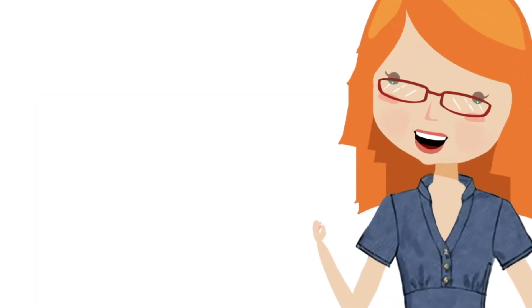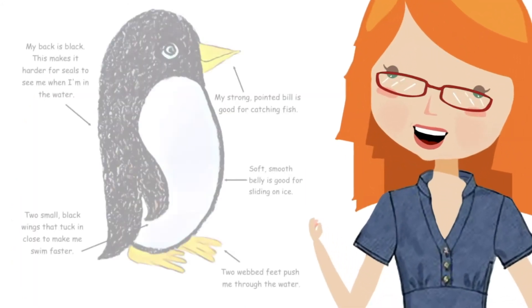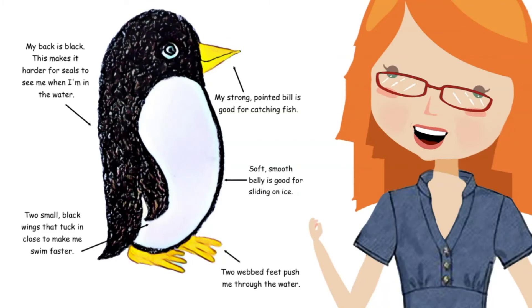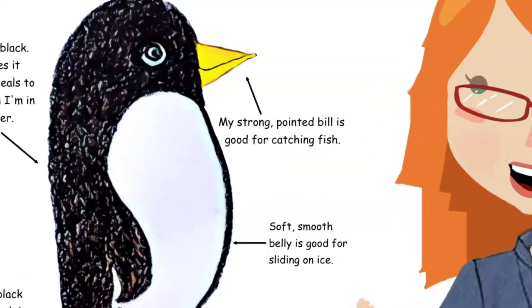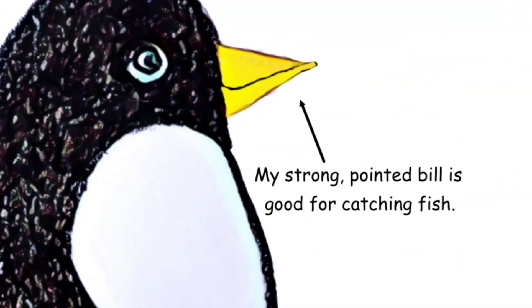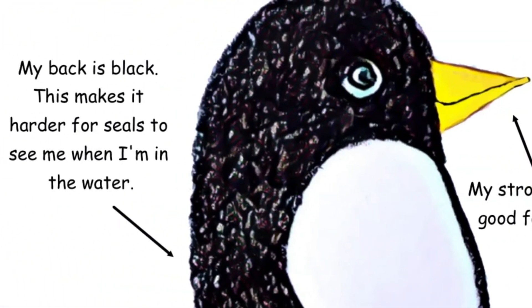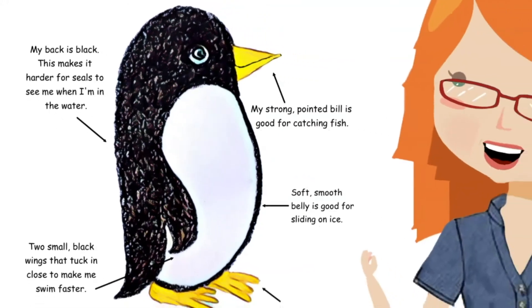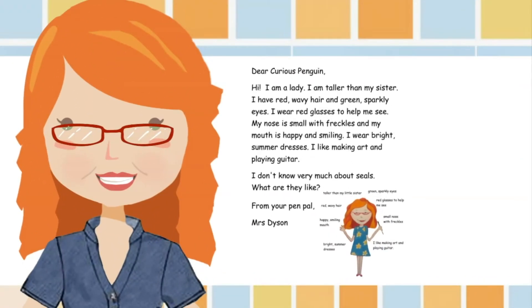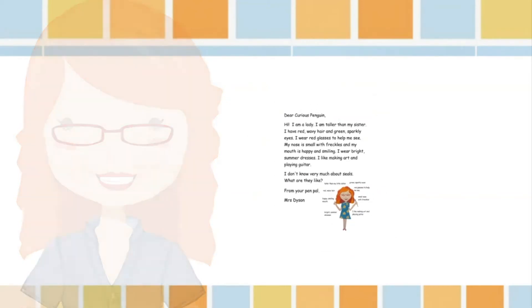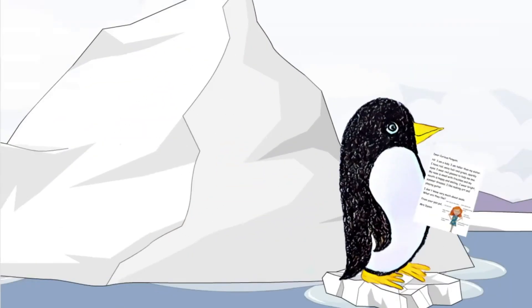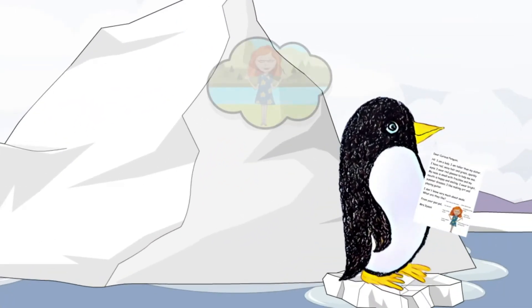This clever penguin has also included a drawing. She has labelled her drawing so that I can make a clearer picture in my mind. Let's write a letter back to the penguin. We can write a factual description of ourselves so that the penguin can imagine what we look like.